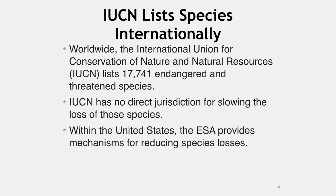Worldwide, the International Union of Conservation of Nature and Natural Resources lists 17,741 endangered and threatened species, including nearly one-fifth of mammals, nearly one-third of amphibians, reptiles and fish, and most of the few mosses and flowering plants that have been evaluated. IUCN has no direct jurisdiction for slowing the loss of these species. Within the United States, the ESA provides mechanisms for reducing species loss.